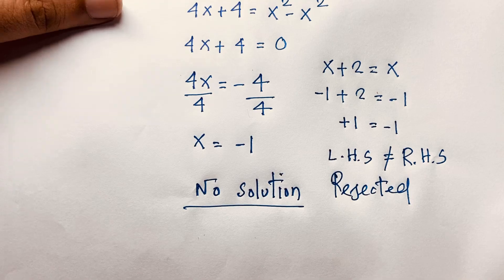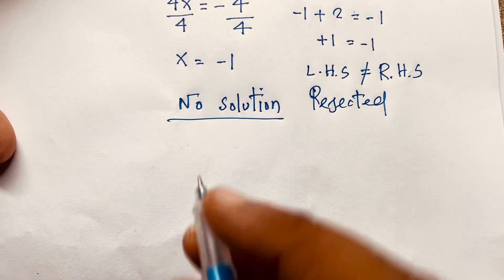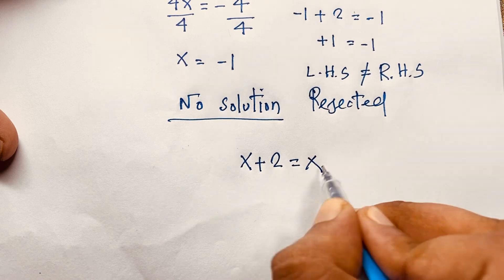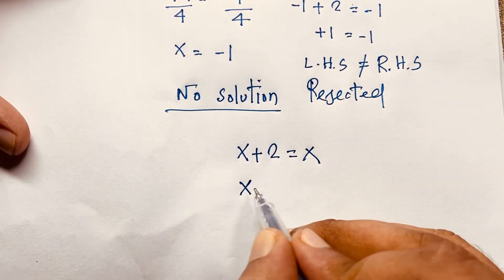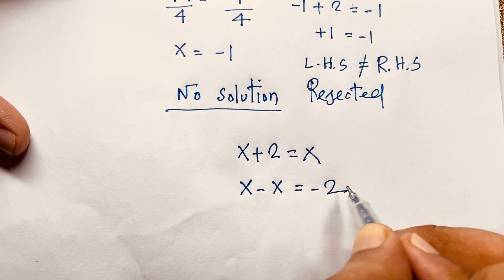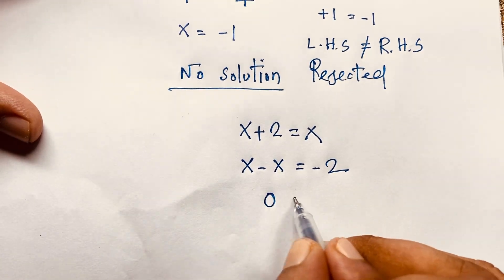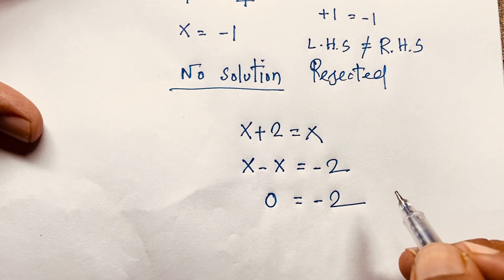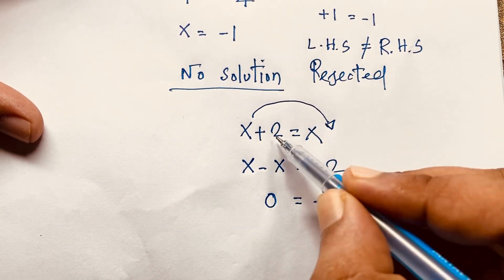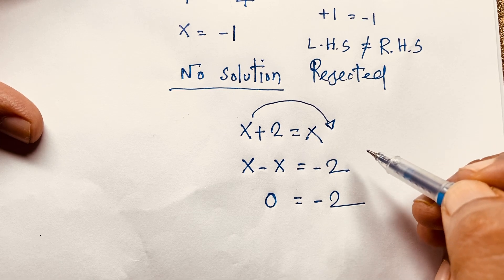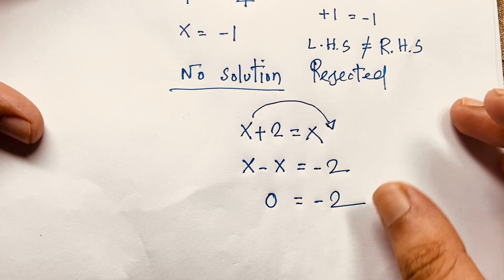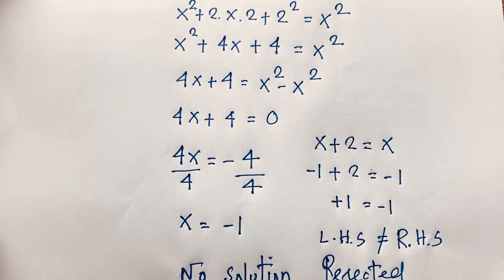Let's check again directly. In √(x+2) = √x, if I move x to this side it becomes x - x = -2, so 0 = -2, which is impossible. Or moving 2 to this side gives 2 = 0, which is also impossible. So you can clearly see there is no real solution.